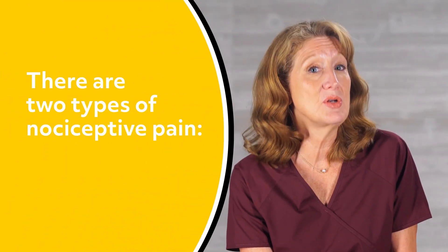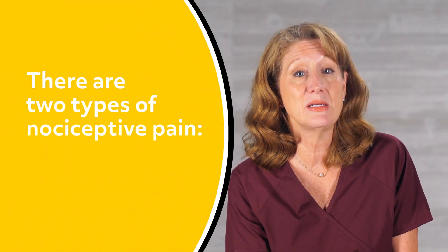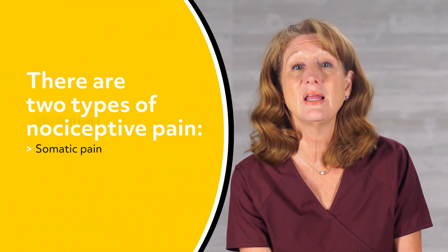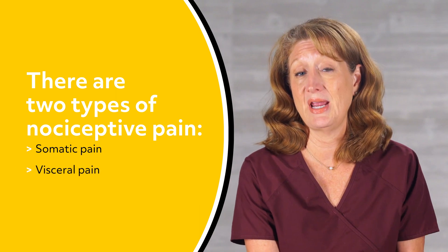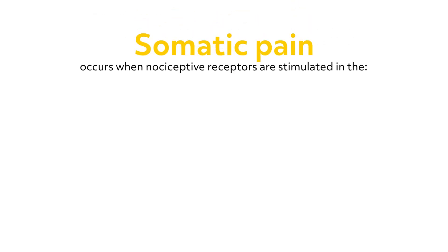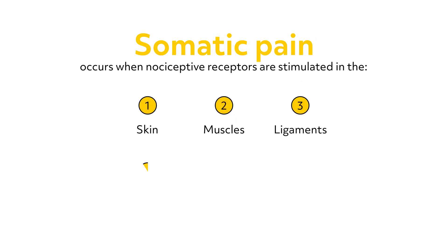There are two types of nociceptive pain—somatic pain and visceral pain. Somatic pain occurs when nociceptive receptors are stimulated in the skin, muscles, ligaments, tendons, bones, or joints.